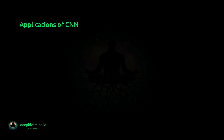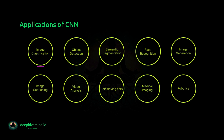Applications of Convolutional Neural Network: CNNs are commonly used for image classification tasks, where the goal is to identify the object or scene in an image. CNNs are also used for object detection tasks, where the goal is to locate and identify multiple objects in an image or video. CNNs can be used for semantic segmentation tasks, where the goal is to assign a semantic label to each pixel in an image.